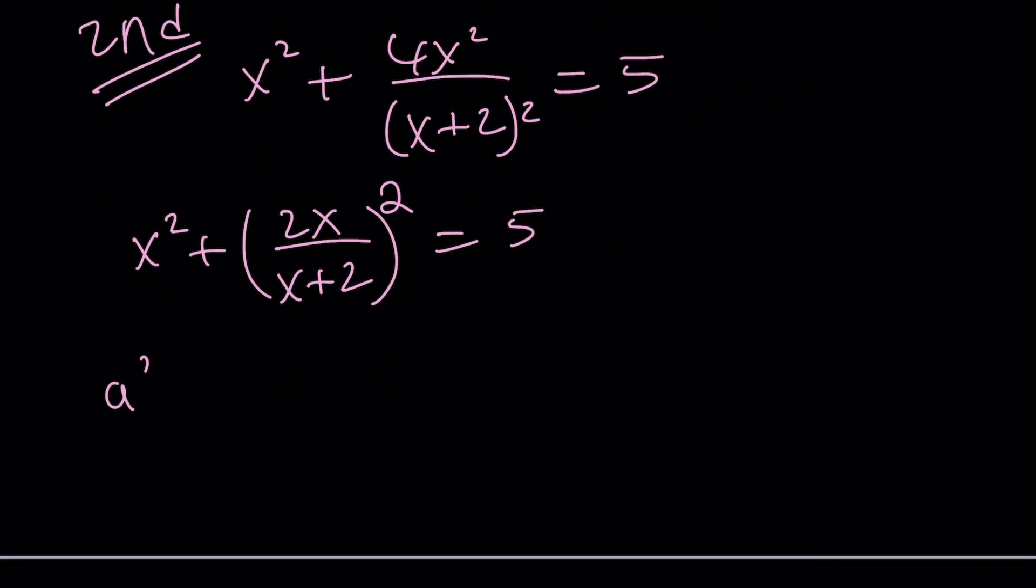When you have sum of two squares, that can be written in two different ways. For example, if you have a² + b², you can write it as (a+b)² - 2ab or (a-b)² + 2ab. Because the term in the middle cancels out.